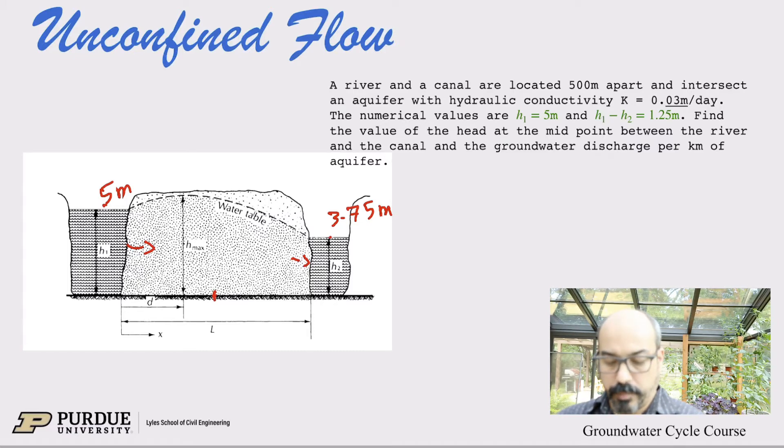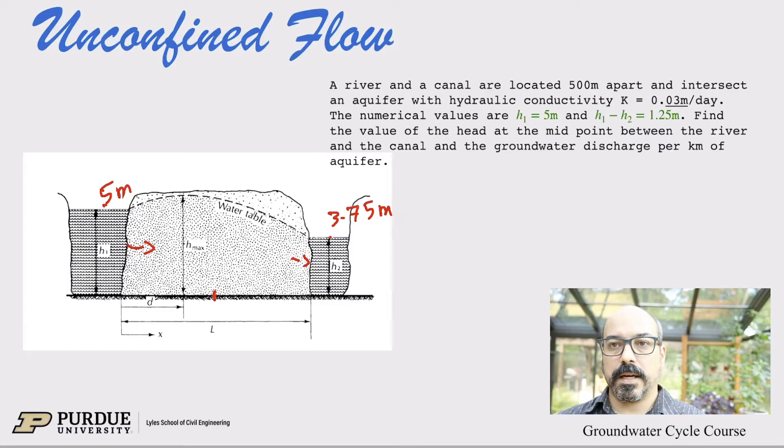And the groundwater discharge per kilometer of aquifers. So remember that Q prime, and sorry for that blurry look sometimes. Okay, so Q prime. What is the discharge per kilometer of river into the river on the right-hand side, or into the canal?